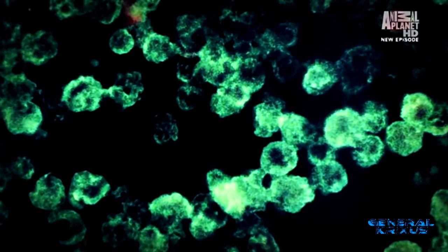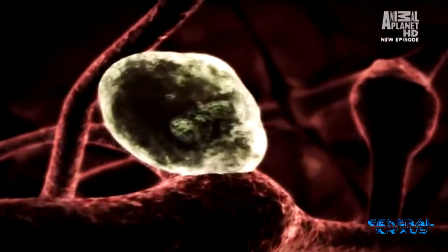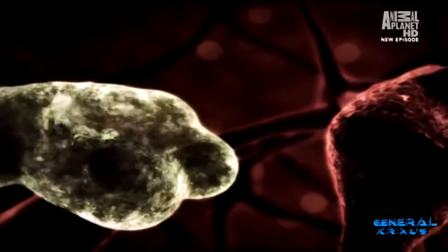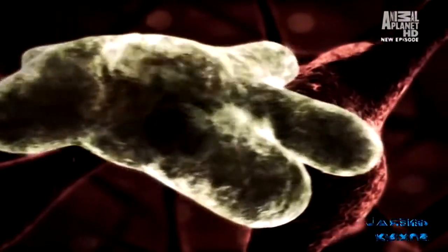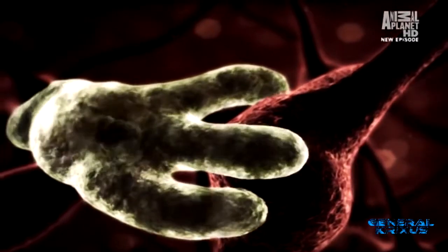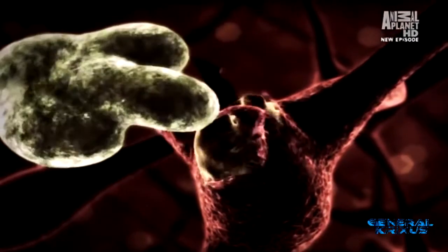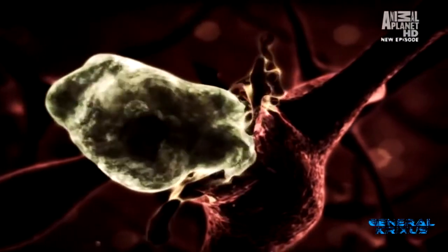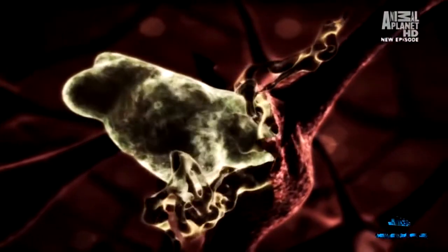The amoeba has a two-pronged attack. First, it hijacks the host cells using special feet called pseudopods. Then, the amoeba cuts a hole in the cell wall. And when the contents of the cell leak out, the amoeba eats them.